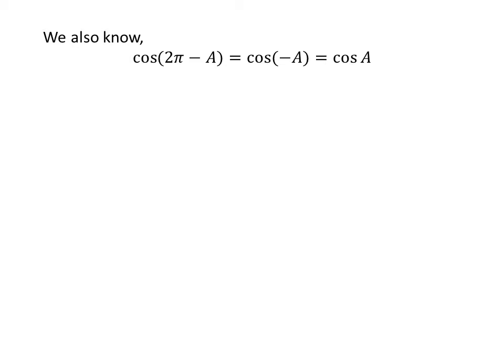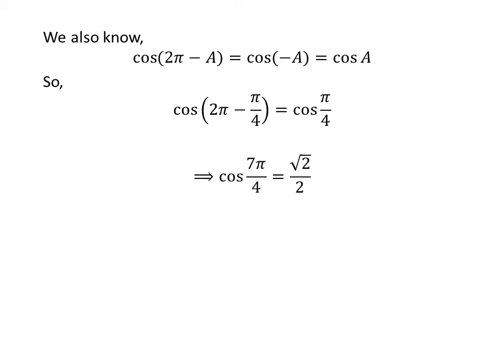We also know the famous trigonometry identity cosine of minus a is equal to cosine of a. The proof of the trigonometry identity is given in the video appearing in the upper right corner of this video, and the link is also given in the description section. Application of the above identity implies that cosine of 2 times pi minus pi upon 4 is equal to cosine of pi upon 4. As 2 times pi minus pi upon 4 is equal to 7 times pi upon 4, so cosine of 7 times pi upon 4 is equal to square root of 2 upon 2.